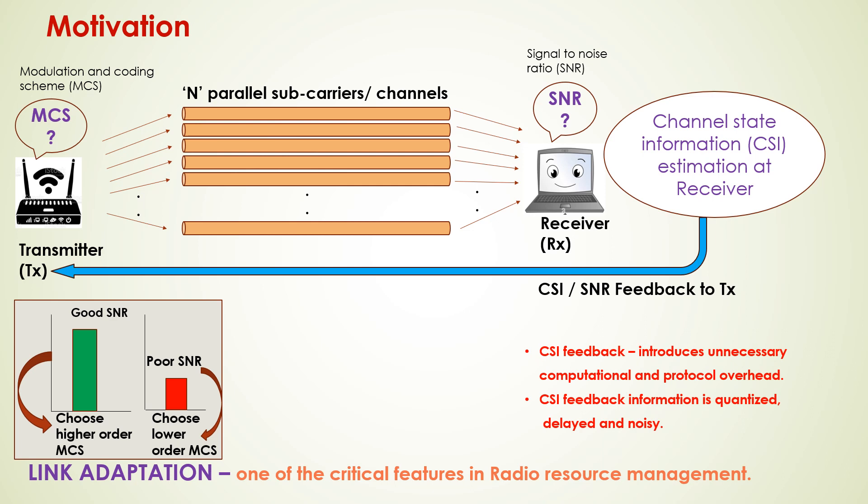The selection of optimal modulation and coding scheme in wireless transmission depends upon the dynamically evolving channel state. Link adaptation in a wireless channel thus depends on the CSI — that is, channel state information — which is estimated at the receiver and is fed back to the transmitter using a CQI report field.